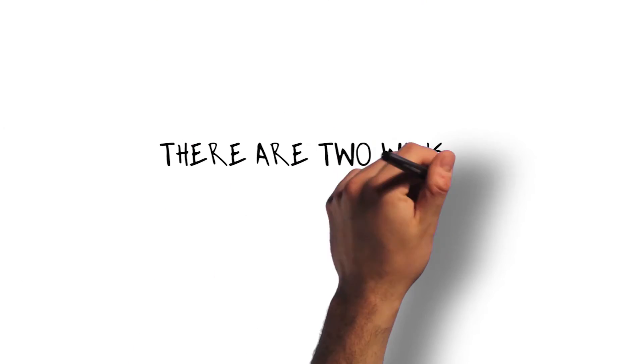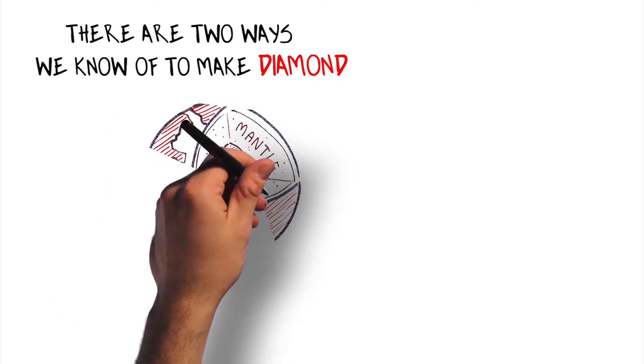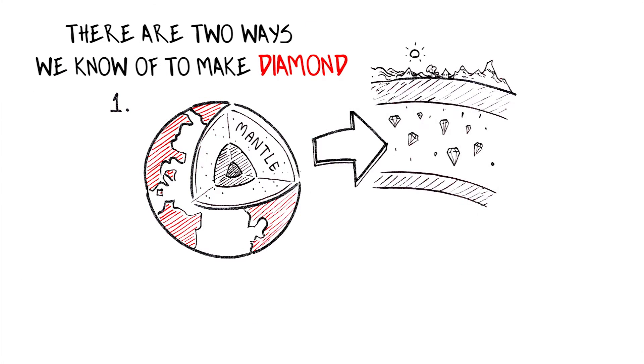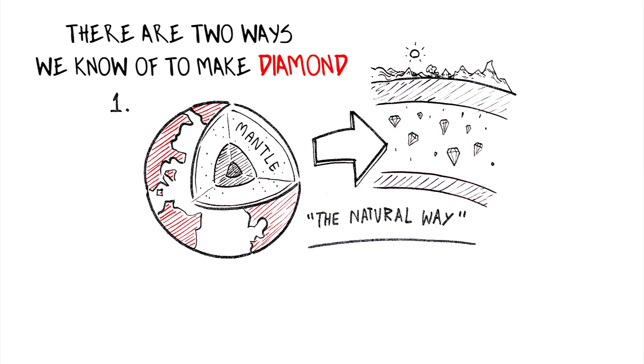There are two ways that we know of that you can grow a diamond. There's under extremely high temperature and extremely high pressure, like it is in the mantle of the earth where diamond forms naturally. But there's another way that you can grow a diamond.